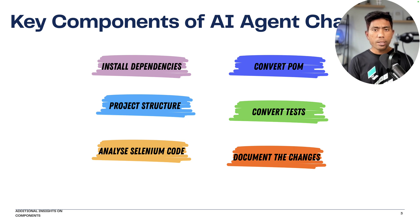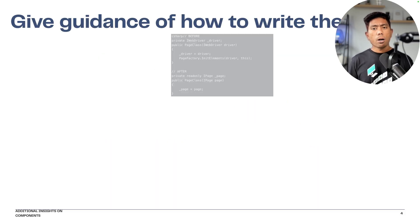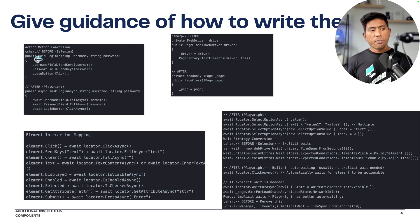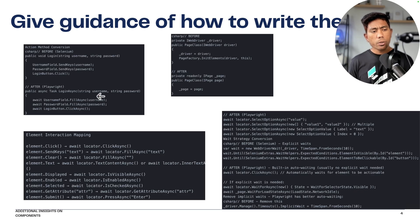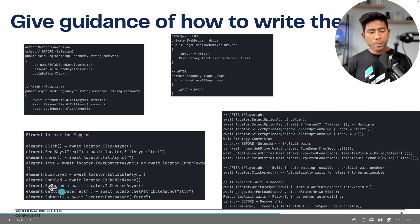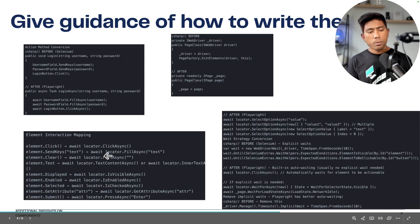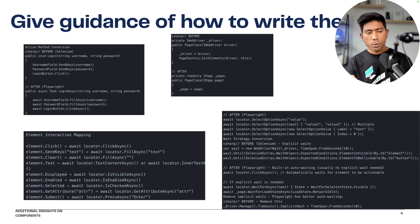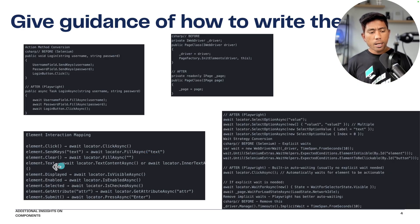Additionally, it documents all the conversion changes in a readme or migration.md file. You also define guidelines — for example, a Selenium method like 'login' becomes 'login async' in Playwright because everything is asynchronous. You use the await keyword and async tasks. You also create an element interaction mapping: a click in Selenium becomes 'await locator.ClickAsync()', SendKeys becomes 'FillAsync(text)', Clear becomes 'FillAsync()', and text retrieval becomes 'TextContentAsync()' or 'InnerTextAsync()'.